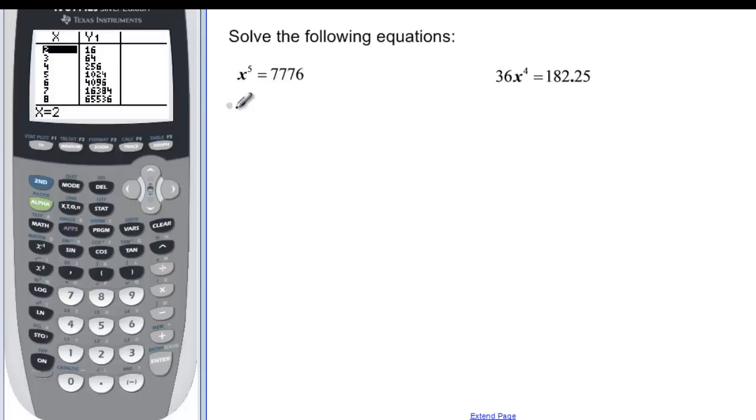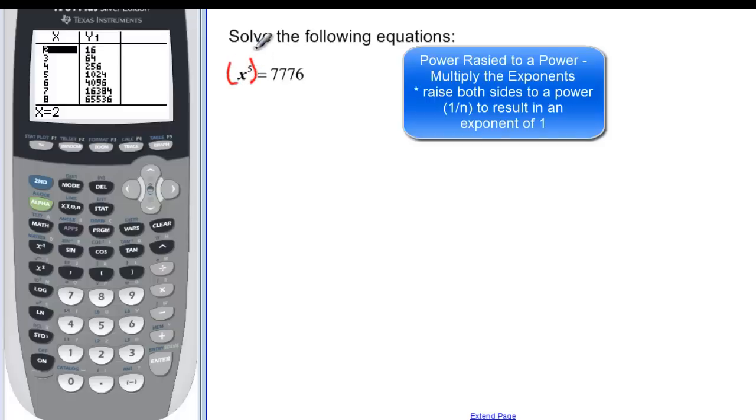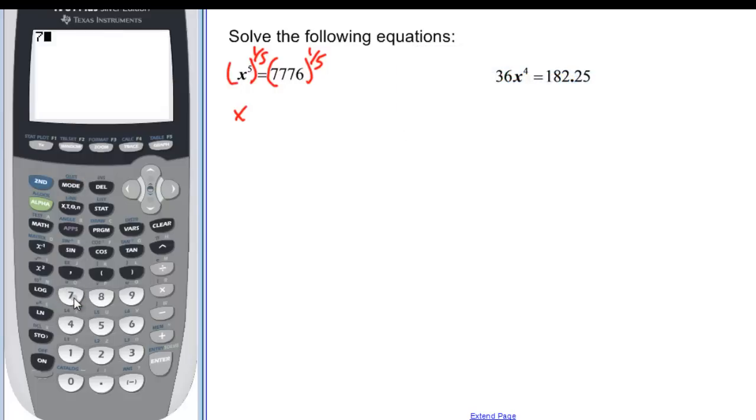If we solve these, remember, we want to take and get this to be an exponent of 1. One way to do it would be just to say, okay, well, if I use my exponent properties, I could multiply my exponents. 5 times 1 fifth would give me x to the first. And if I take that side to the 1 fifth, I can take this side to the 1 fifth. And in my calculator, 7,776 carat, and then it's a fraction, so I have to put it in parentheses, 1 divided by 5, and I find out that that is 6.